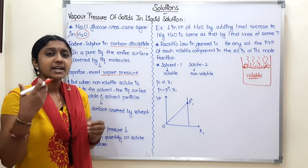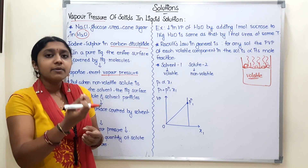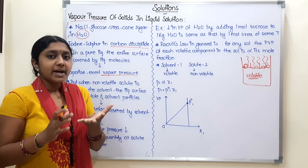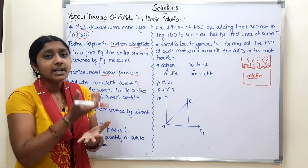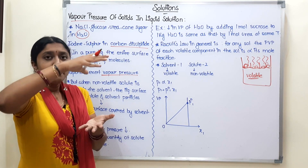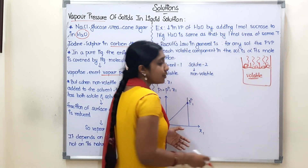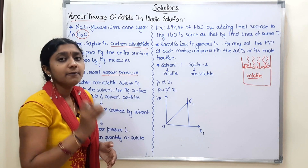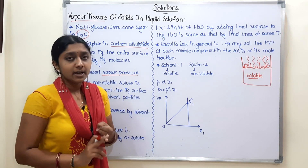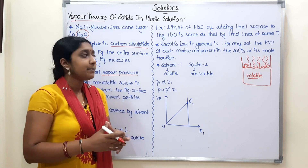Now, vapor pressure is the pressure exerted by vapors on the liquid surface. The liquid is volatile, so it is easier to evaporate. There are vapors on the surface, and those vapors exert pressure on the liquid surface. That pressure is called vapor pressure. There is a difference between vapor pressure and partial vapor pressure.